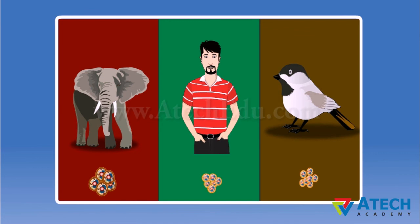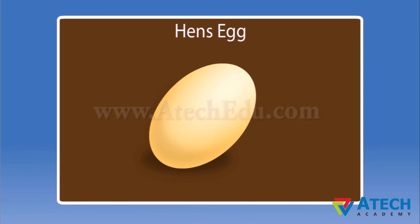Size of cell does not depend on the size of the body of the organism. The size of cells in an elephant, human body, and a bird differ slightly but they are not in proportion to their body size. The size of the cell is related to its function. The nerve cells in an elephant and a rat are larger than the blood cells because nerve cells have a more complex function. Do you know that a hen's egg is a single cell?